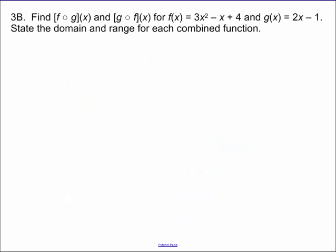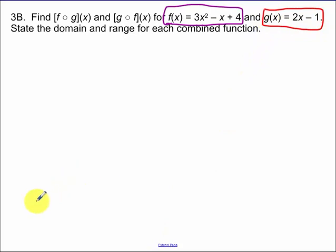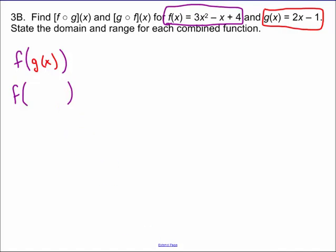Remember your answer here is going to be point values. Now we're doing f of g of x where we actually have functions. F of x I'll write in purple and g of x in red. For the first one, we want to do f of g of x. Your function g of x is 2x minus 1. So it's f of (2x minus 1).